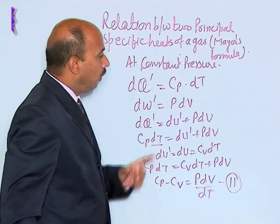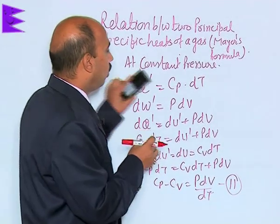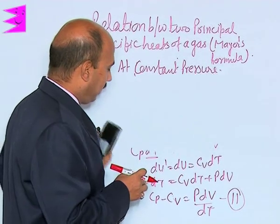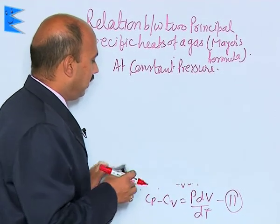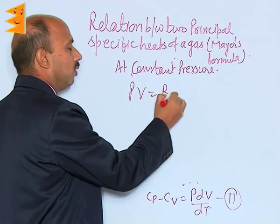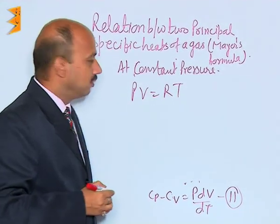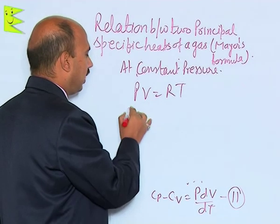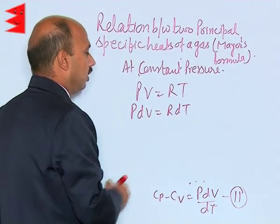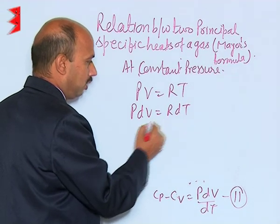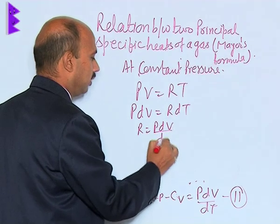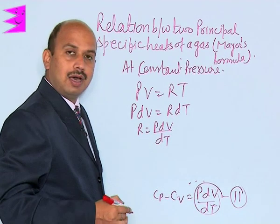We know the ideal gas relation PV equals RT. Differentiating both sides at constant pressure gives P dV equals R dT, so R equals P dV upon dT. In place of P dV upon dT in equation 2, we can now write R.